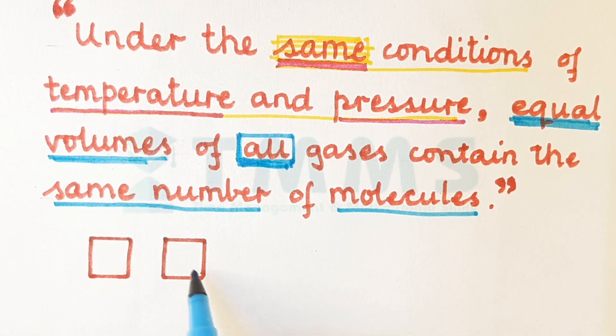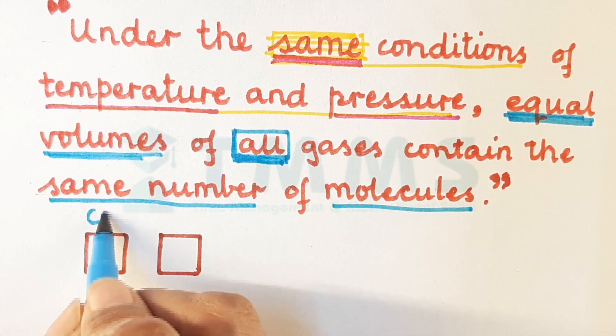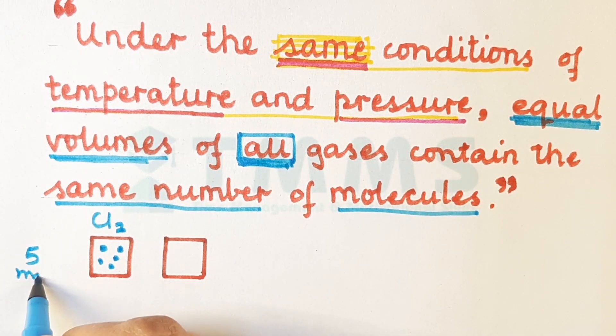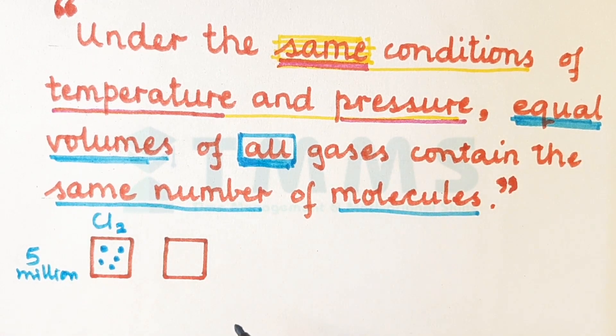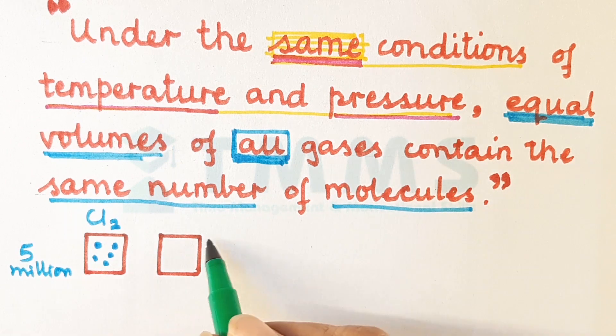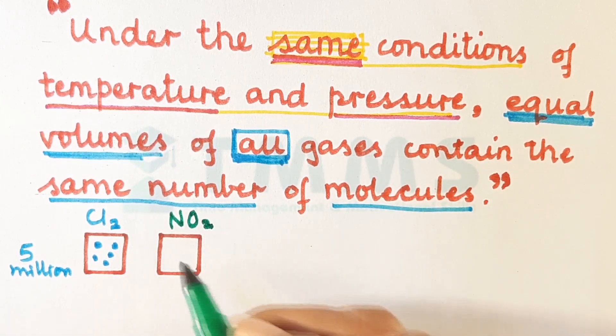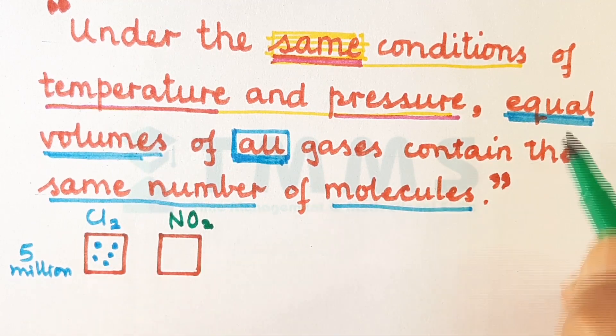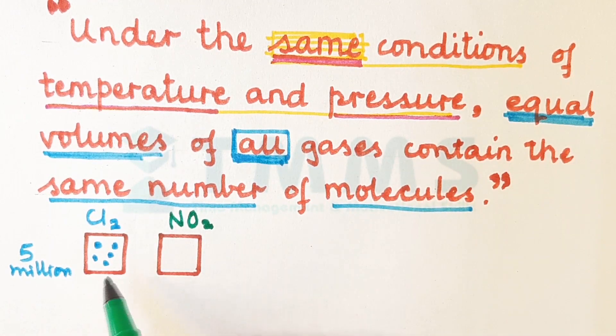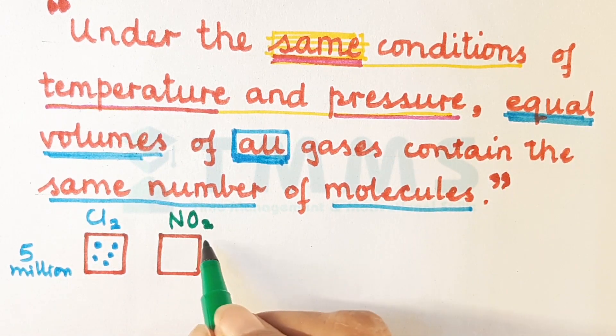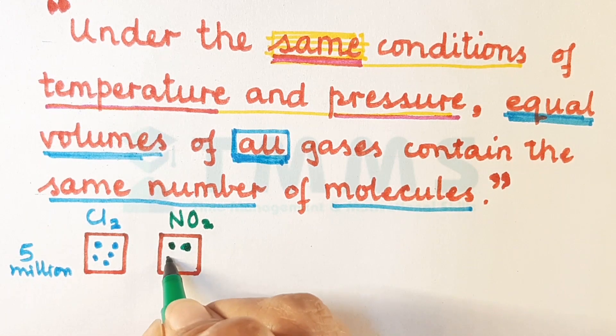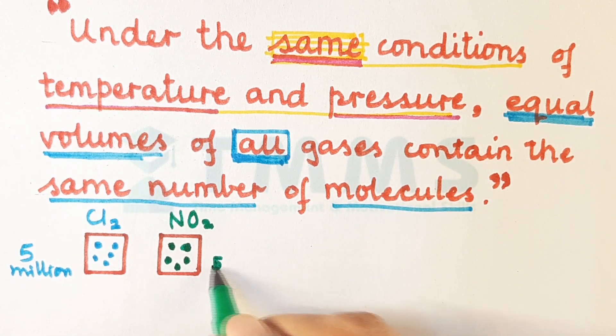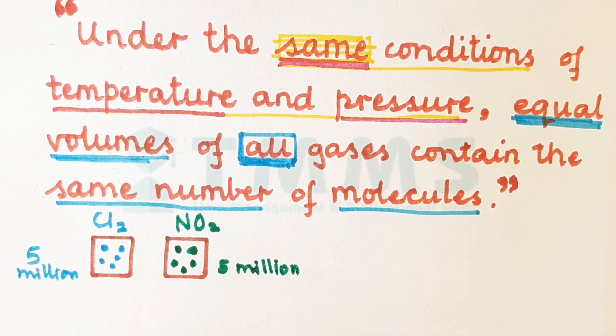So let us say that we have two containers and in the first container gas chlorine and let us say I have 5 million molecules of chlorine. Now I have another container here. This is having nitrogen dioxide. And this container also has the same volume as this. And so if the volumes are equal, remember what the law says. Equal volumes. So if I take equal volumes of chlorine and equal volume of nitrogen dioxide, then this nitrogen dioxide also will have the same number of molecules, which means this will also have 5 million molecules.